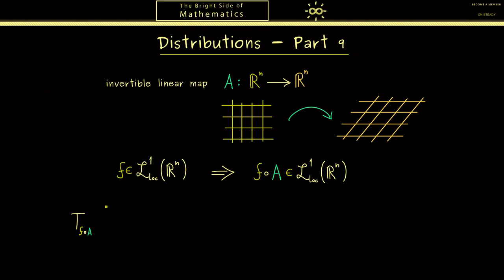Therefore we first need to look at what Tf is. So let's apply it to a test function phi. Of course we don't have a problem here, we know this is given by an integral. However, now inside the function f here we have the map A, so this is simply what the composition does.